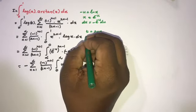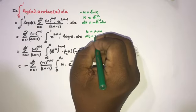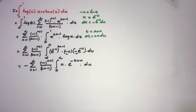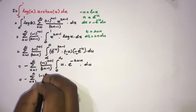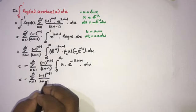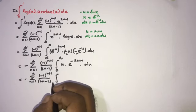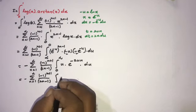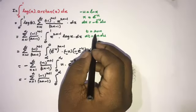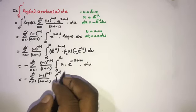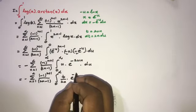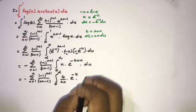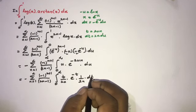We take a second substitution: let t = 2un, so dt = 2n du. Substituting, u = t/(2n), e^(-2un) becomes e^(-t), and du = dt/(2n). The limits remain 0 to infinity.